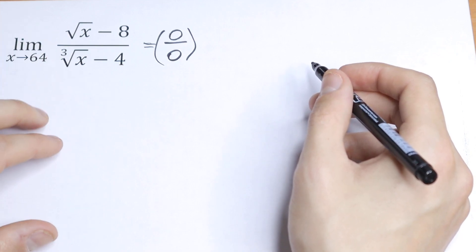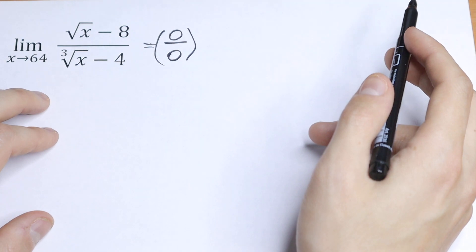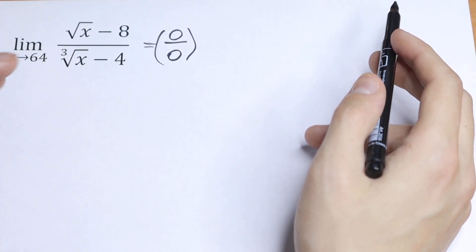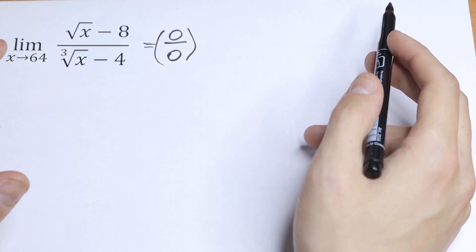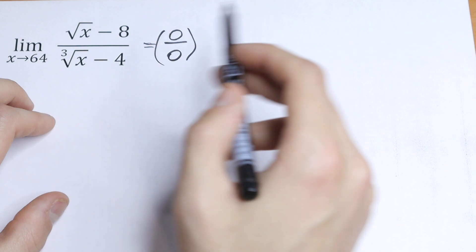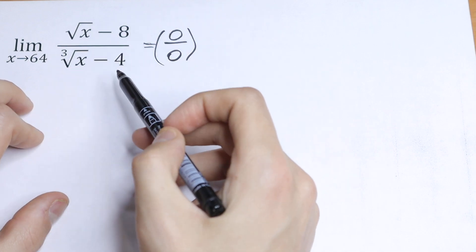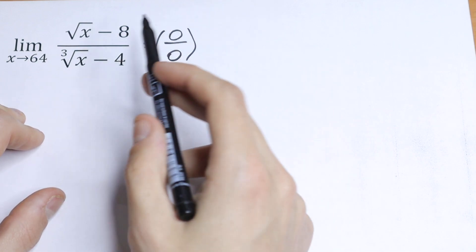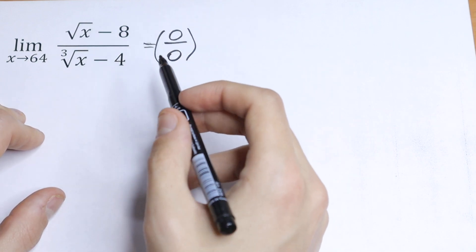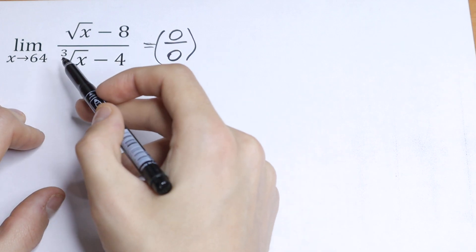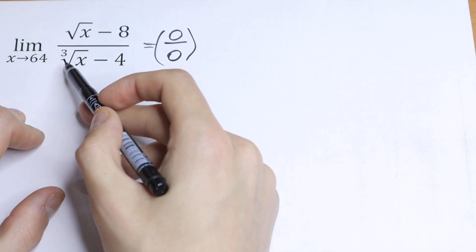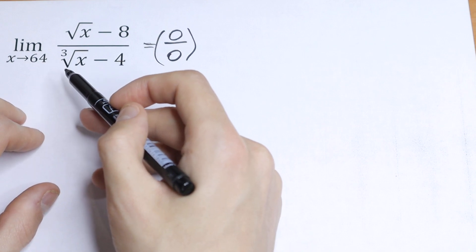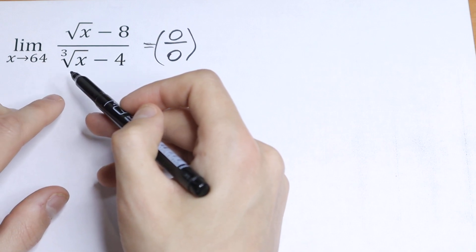So what are we going to do? The main method I recommend is to multiply the top and the bottom by the conjugate of the expression that contains the square root. But we have both a square root and a cube root in our denominator, so we need to multiply by the conjugate two times.